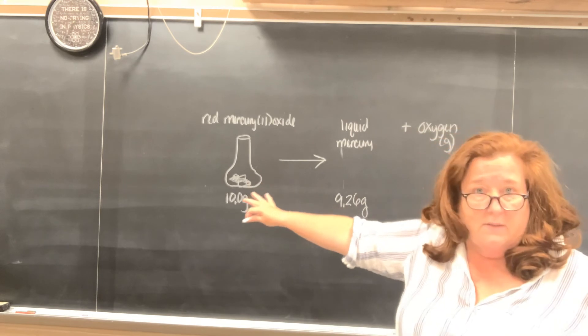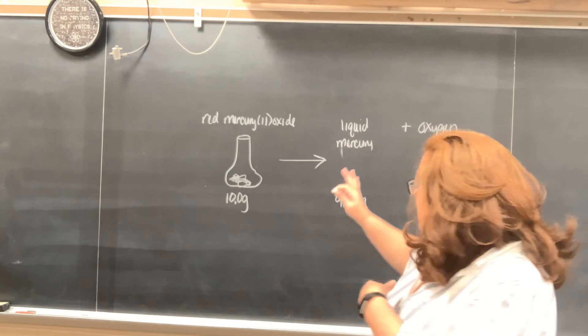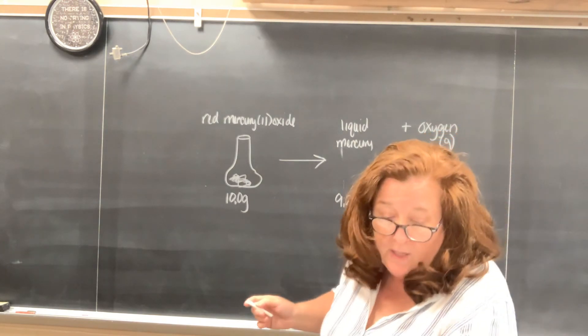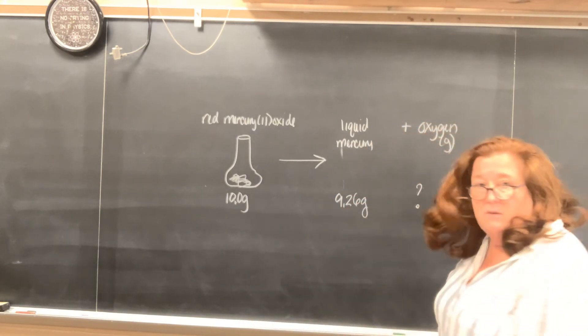Mercury 2 oxide is made out of mercury and oxygen in a compound. They heat it and it becomes mercury liquid, and then the oxygen gas is going to be released. What they want to know is, what's the mass of oxygen formed in the reaction? That's what they're looking for.